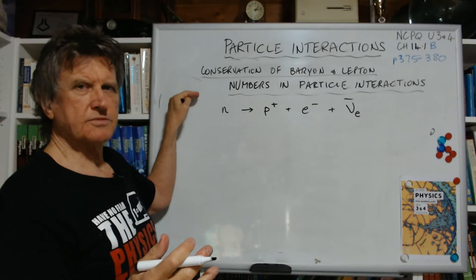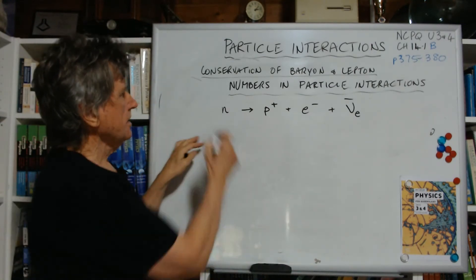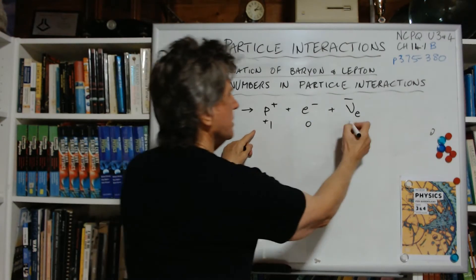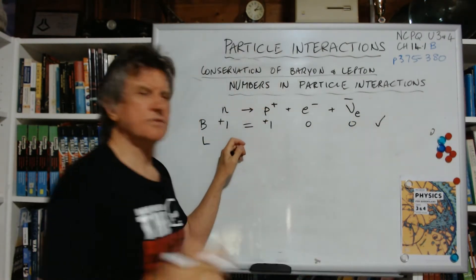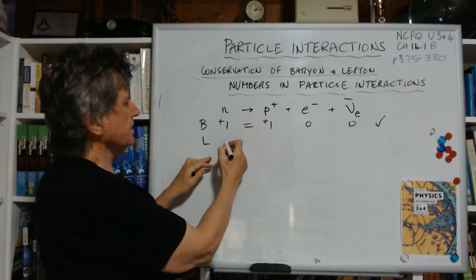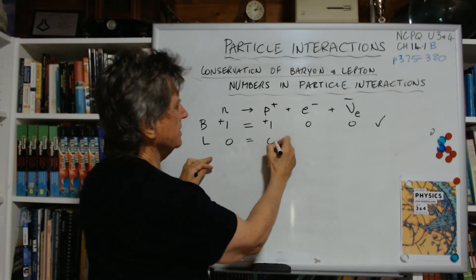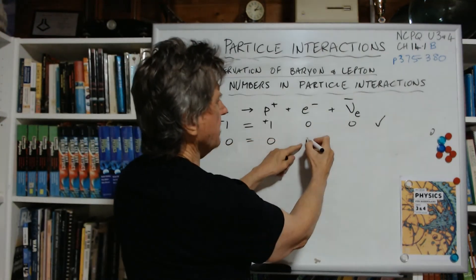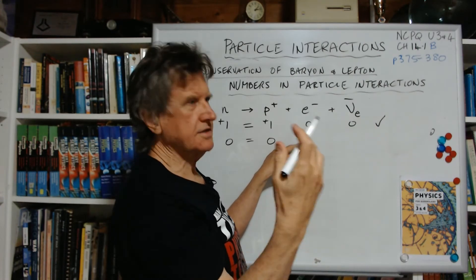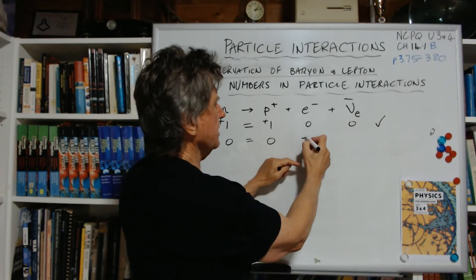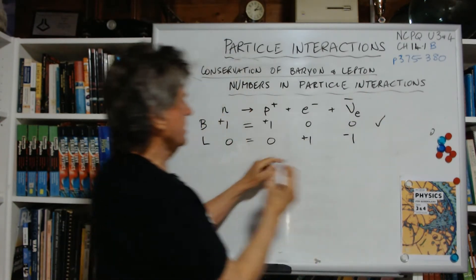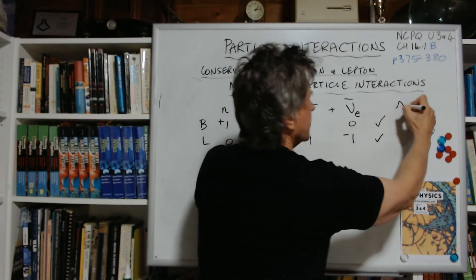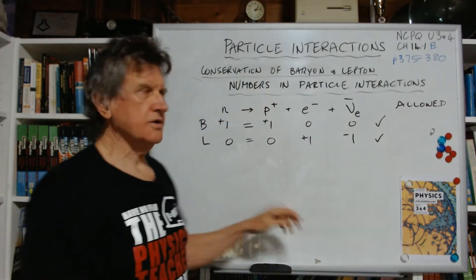I'm not doing this in terms of quarks right now — we'll do that in the Feynman diagrams section. In terms of B and L: neutron is a baryon, so plus one; proton is a baryon, plus one; electron and anti-neutrino are zero for baryon. Yes, they're equal, so baryon conservation is satisfied. For lepton: neutron is not a lepton, so zero; proton is not a lepton, zero; electron is the particle so plus one; anti-neutrino is the antiparticle so minus one. Zero equals plus one plus minus one equals zero. So this reaction is allowed.